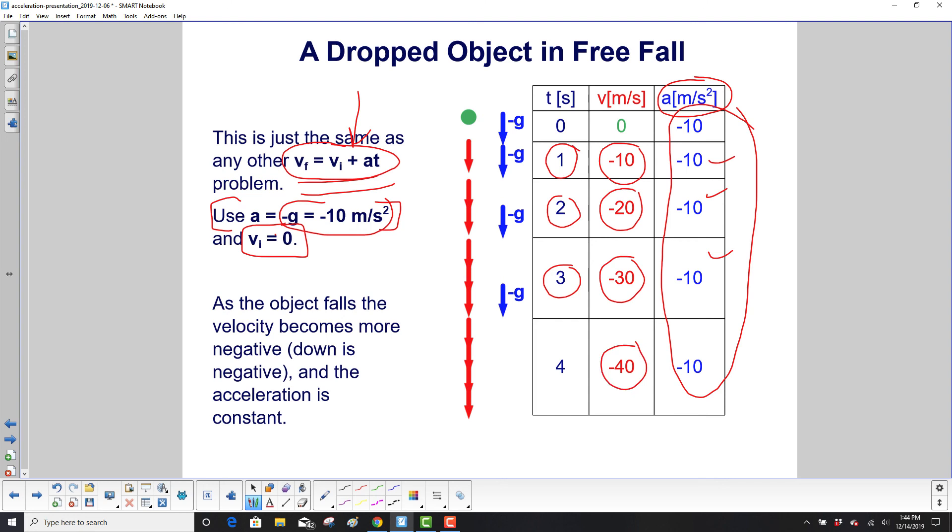Now, meters per second may not mean much to you, however, let's look at after two seconds for an object dropping. 20 meters per second is about 42 miles per hour. That is incredibly fast for something that's only been dropping for two seconds, right? Because there's 2.2 miles per hour for every meter per second. After four seconds, you're going almost 80 miles an hour. And again, assuming there's no air friction here.